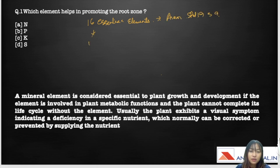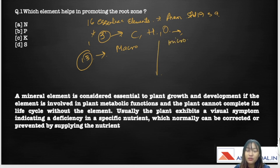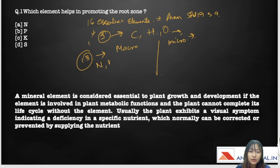The main abundance comes from carbon, hydrogen, and oxygen, so we're left with 13 nutrients. These can be further divided into macronutrients and micronutrients, classified on the basis of their relative abundance. In macronutrients, we have nitrogen, phosphorus, potassium, calcium, magnesium, and sulfur.